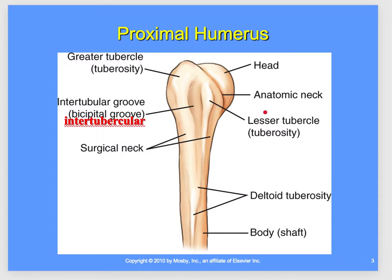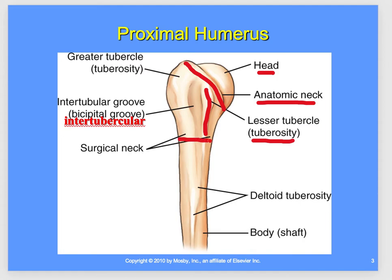On the proximal humerus, we have the head of the humerus, the anatomic neck right here, our lesser tubercle (a tuberosity) right here, our surgical neck underneath, and the intertubercular groove — also called the bicipital groove — right here in the open space.